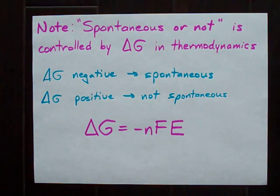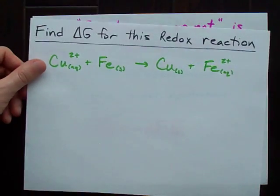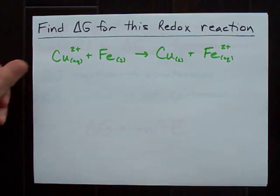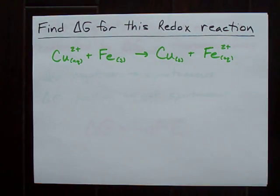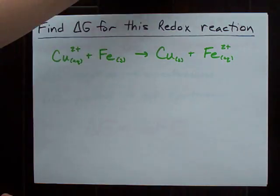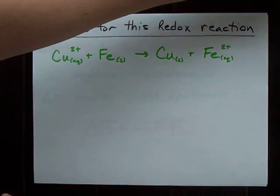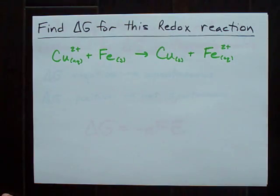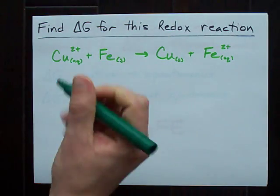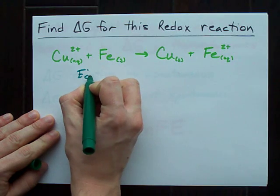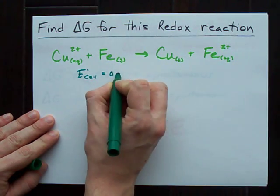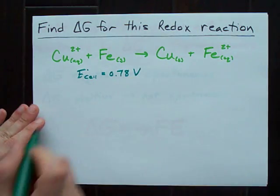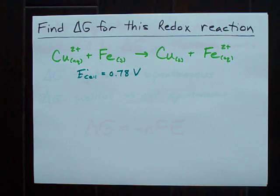You could theoretically be asked what delta G is for a particular redox reaction. Now, we've figured out in a previous video that E cell for this reaction is 0.78 volts. What is delta G?